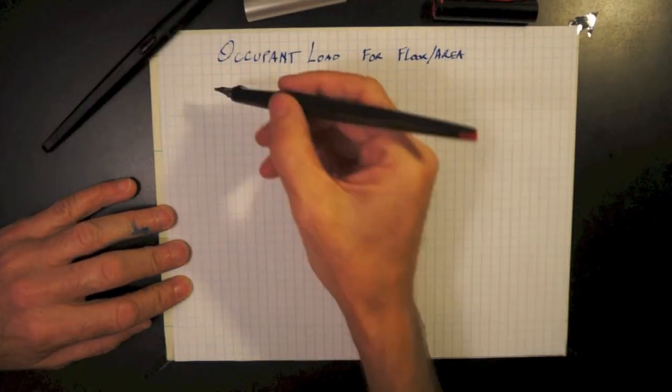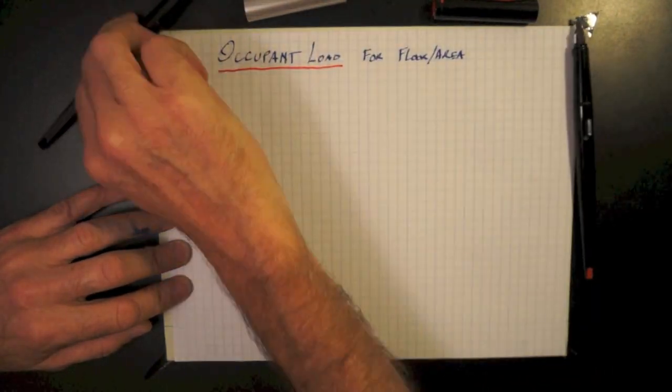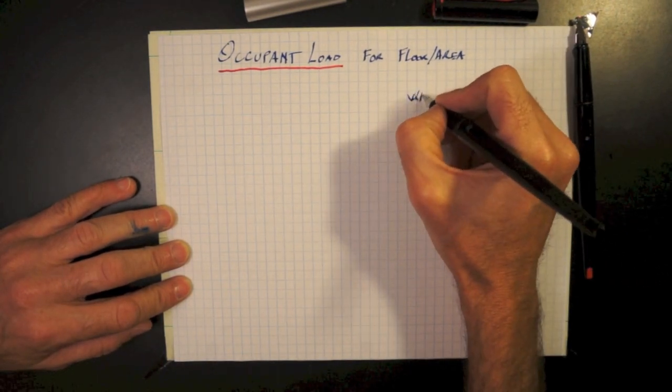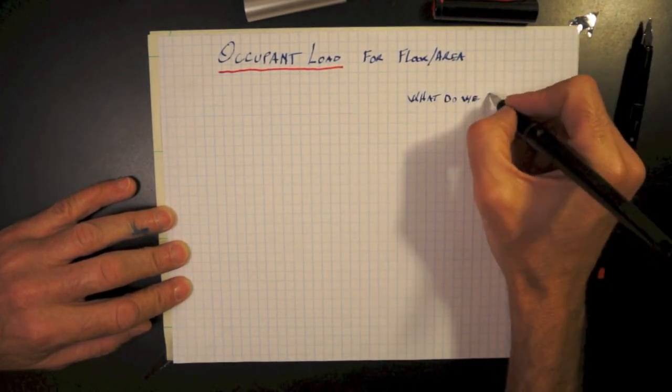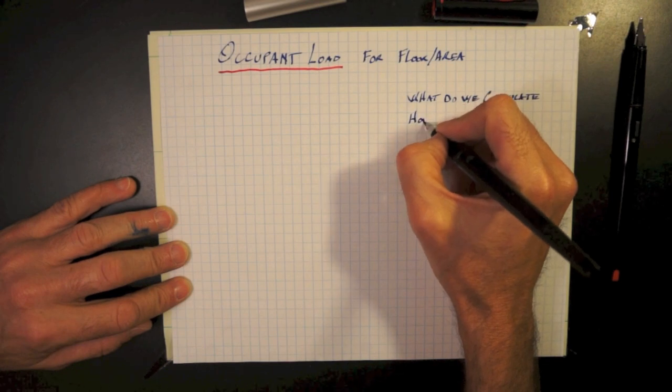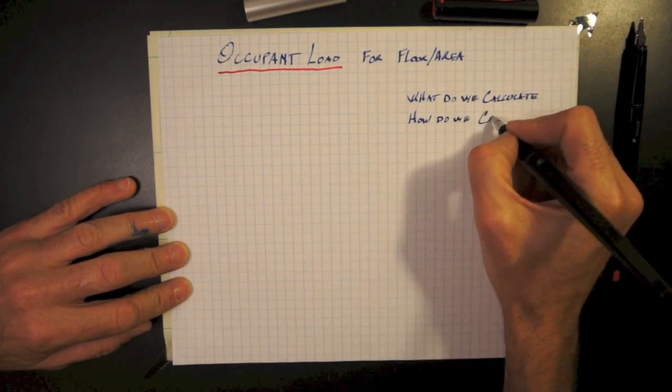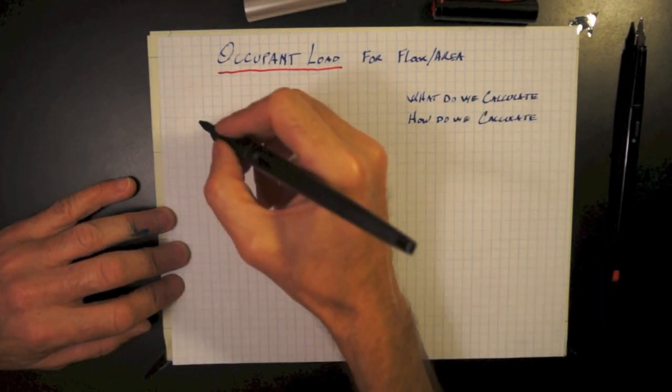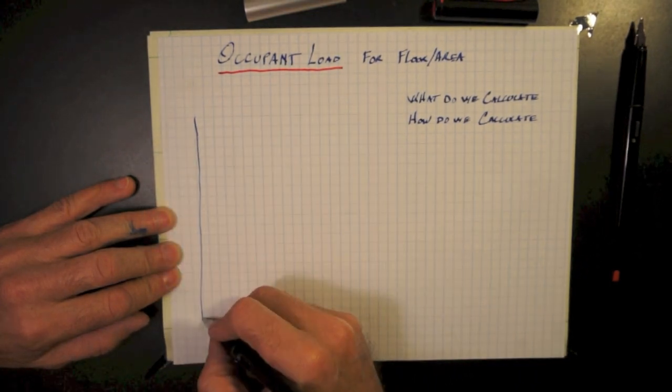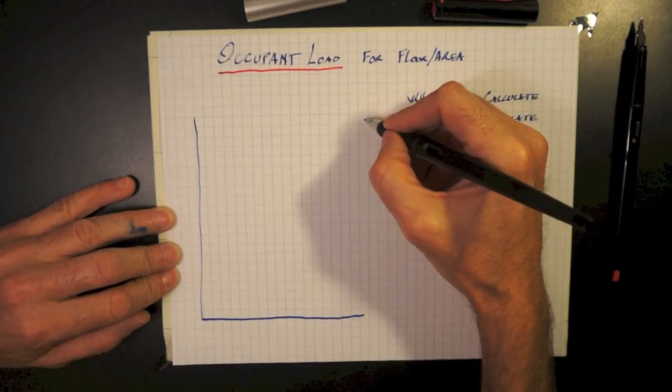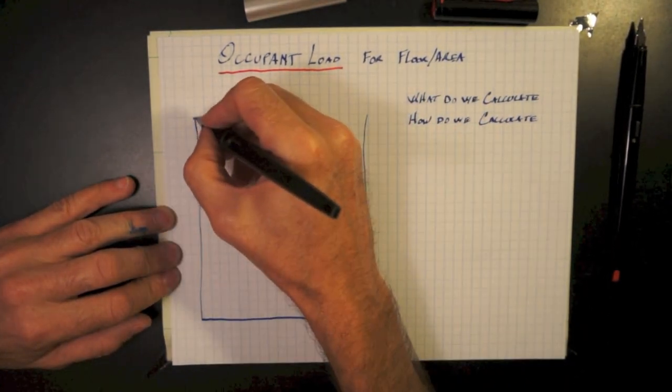Occupant load for floor or floor area. What do we need to calculate and how do we need to calculate it? Some common misunderstandings: We do not use one calculation for the entire building. We divide up the building into different areas and do the calculation for each of those areas.